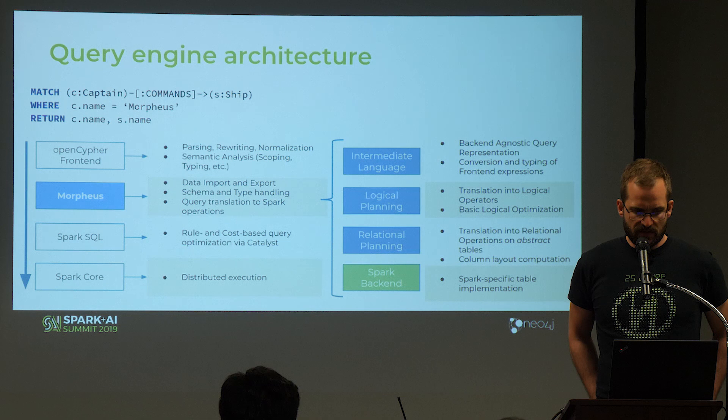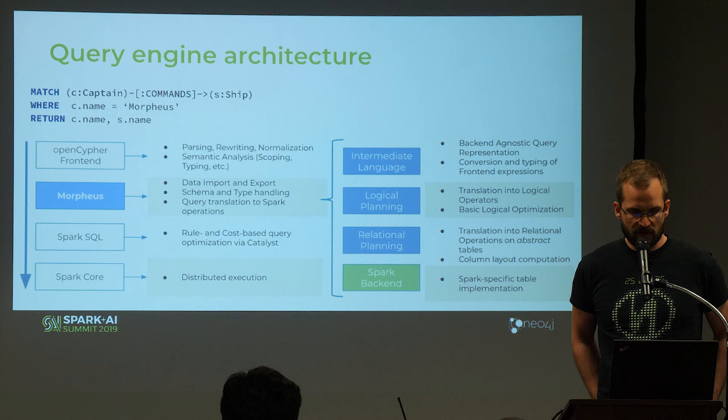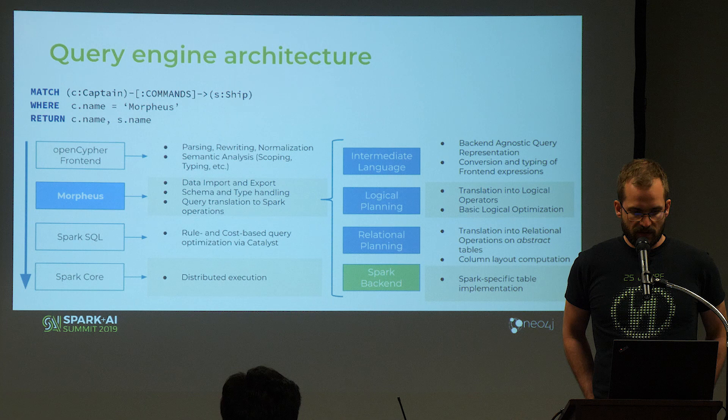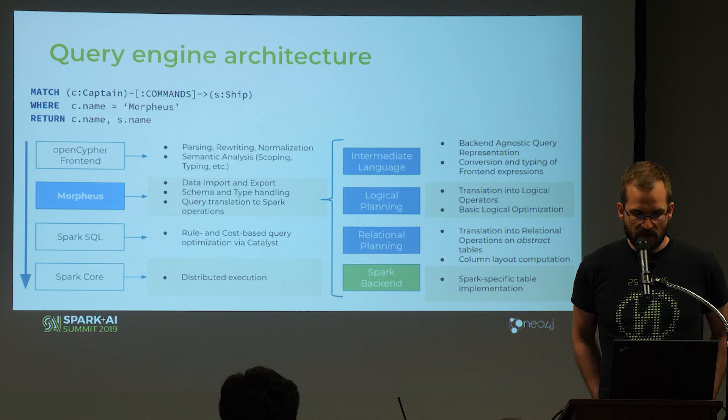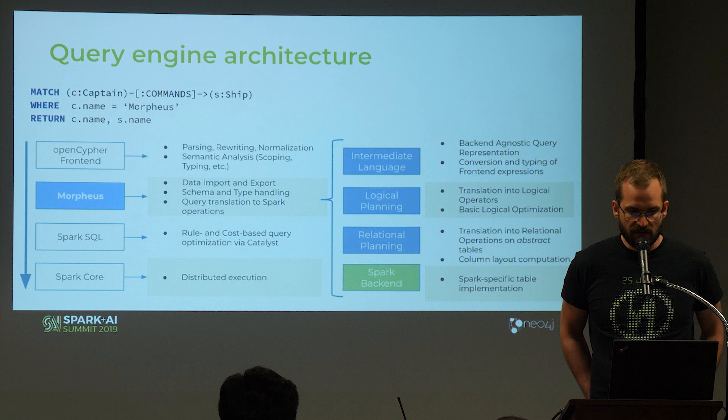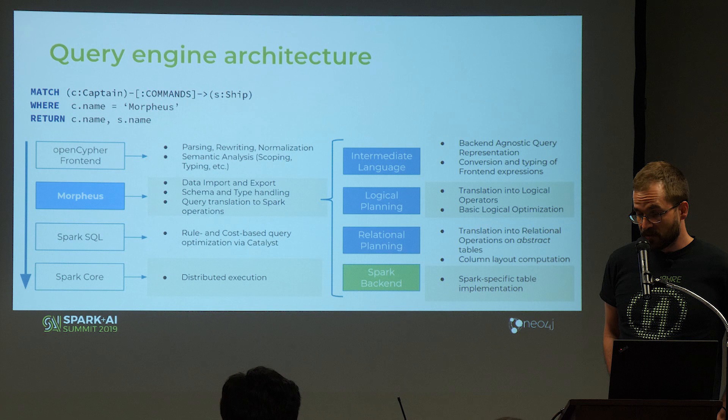Looking at some technical details: here's a Cypher query that looks for a captain that commands a ship, where the captain's name is Morpheus, and we want to know the captain's name and the ship's name. We take this Cypher query and put it into the OpenCypher frontend, a module shared with the Neo4j database, responsible for parsing, rewriting, and normalization of the query. The output is an abstract syntax tree (AST), which is the input to the Morpheus system.